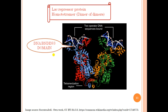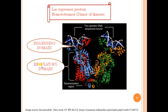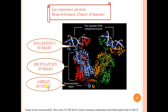Just below the helix-turn-helix motif, there is a hinge region which also makes contacts with the operator DNA, but it binds to the minor groove. The next domain is called the regulatory domain, which binds to allolactose. Once the regulatory domain is bound to allolactose, the repressor can no longer bind to the operator. At the C-terminus of each subunit, there is an alpha helix forming a four-helix bundle, also called the tetramerization region, which holds the four subunits together.